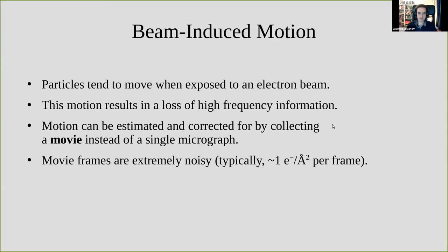Beam-induced motion is the effect that cryo-EM samples begin to move when they're illuminated by an electron beam. This produces blurry images if not accounted for, and those damage the high-frequency information in all the reconstructions we make from those images. For a long time, people have collected movies instead of single micrographs and then tried to align the frames of those movies to correct for this beam-induced motion.